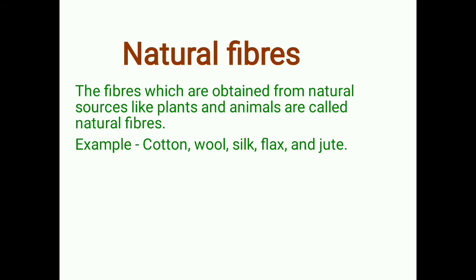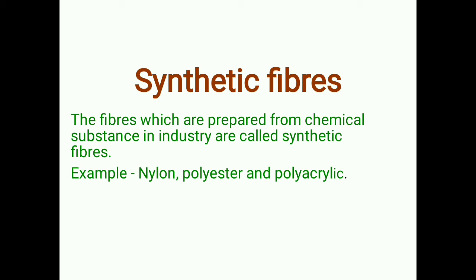Next we will study about synthetic fibers. For thousands of years, only natural fibers like cotton, wool, and silk were available for making fabrics. But in the last hundred years or so, fibers are also made from chemical substances which are not obtained from natural sources like plants and animals. These fibers prepared from chemical substances in industry are called synthetic fibers. They are also called artificial fibers or manufactured fibers. Examples include nylon, polyester, and polyacrylic.